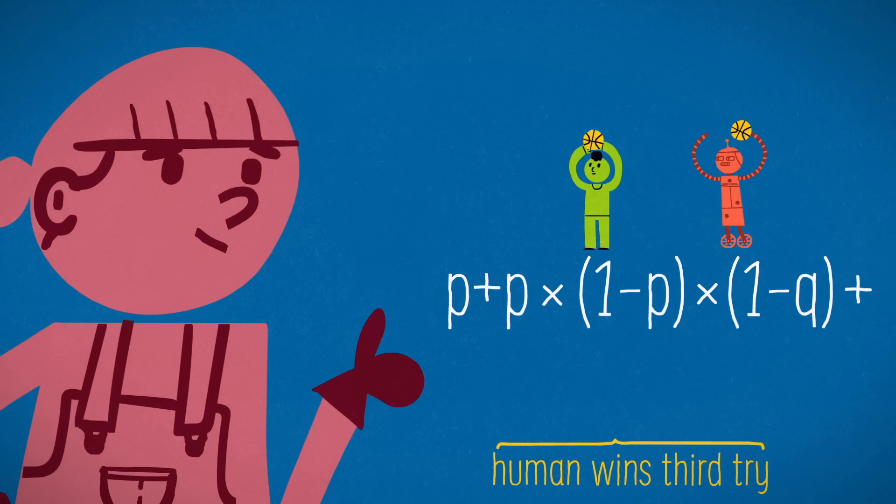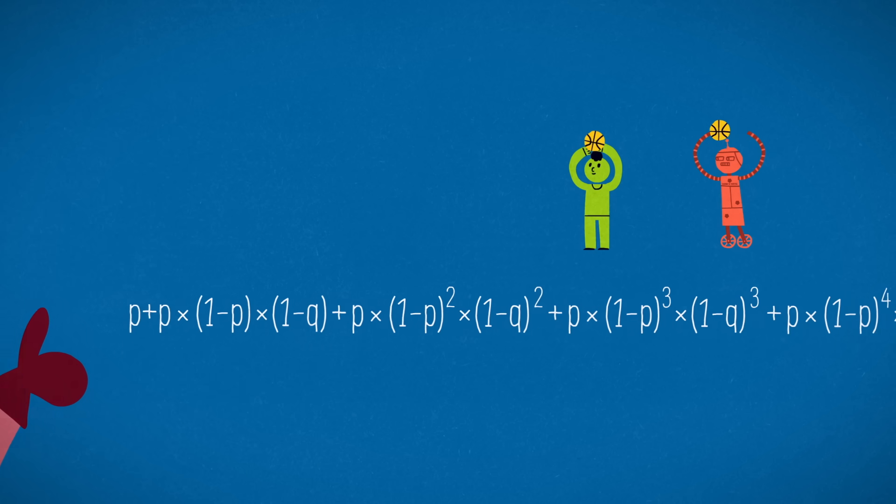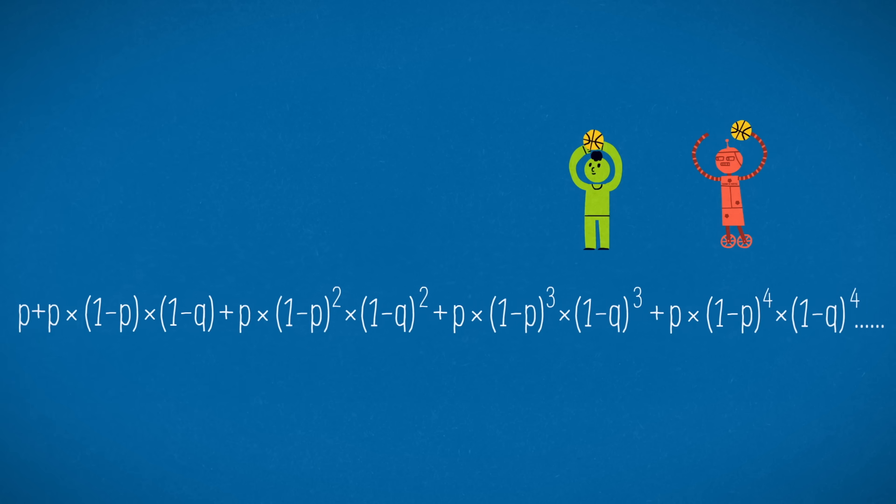Winning on the third try requires another round of misses. So that chance is P multiplied by the double miss probability twice. If we add all the possible probabilities of a human win, the total is the sum of a geometric series.